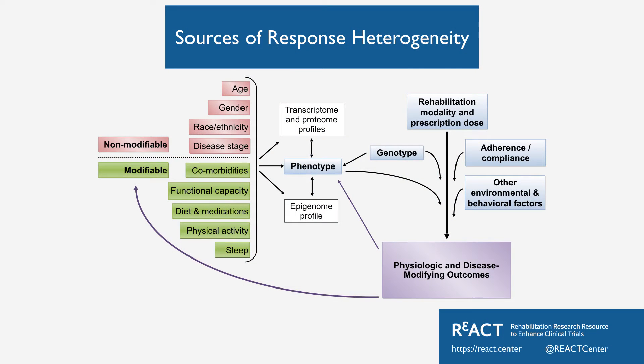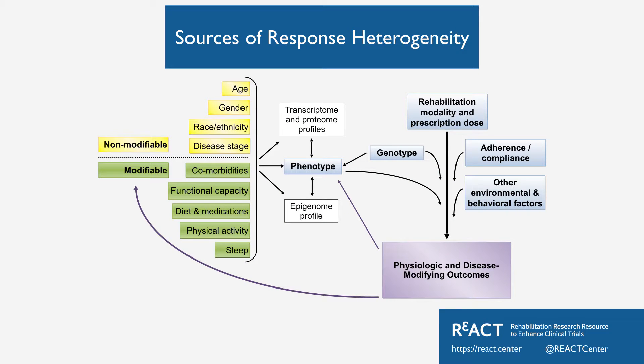This is a great opportunity for the field to learn more about this range of responses across people and to design interventions that target those who don't respond to the traditional form of therapy. There are many sources underlying this response heterogeneity. We can talk about non-modifiable sources, such as how old the individual is, whether they are male or female, their racial or ethnic background, and their stage of disease. Recruiting a diverse cohort introduces variables that can influence whether or not they respond well.